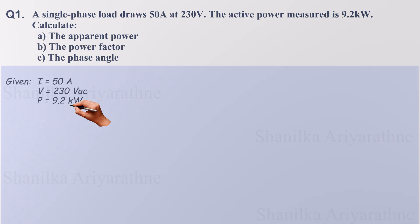First, let's calculate the apparent power. Remember, this represents the total power delivered to our load, found by multiplying voltage and current. Voltage is 230 and current is 50, which gives us 11,500 volt amperes, which is 11.5 kilovolt amperes.